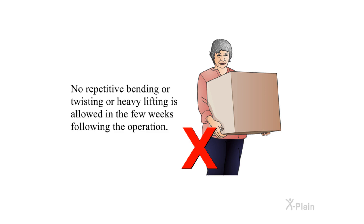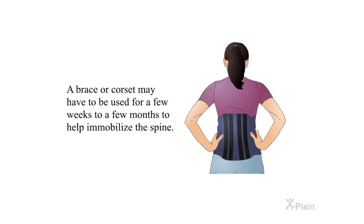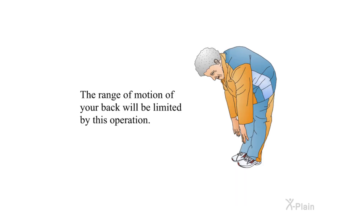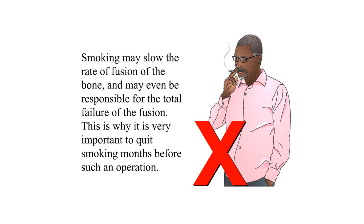After the surgery: No repetitive bending, twisting, or heavy lifting is allowed in the few weeks following the operation. A brace or corset may have to be used for a few weeks to a few months to help immobilize the spine. The range of motion of your back will be limited by this operation. Smoking may slow the rate of fusion of the bone and may even be responsible for the total failure of the fusion — this is why it is very important to quit smoking months before such an operation.